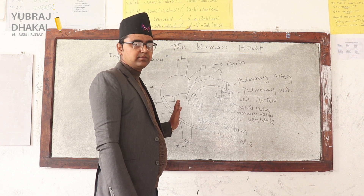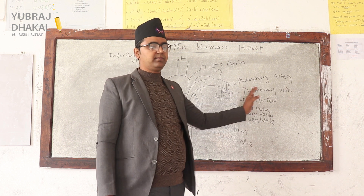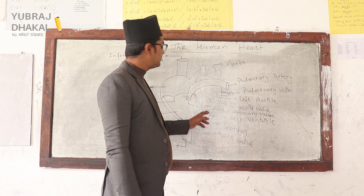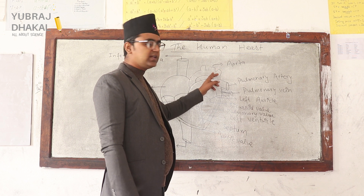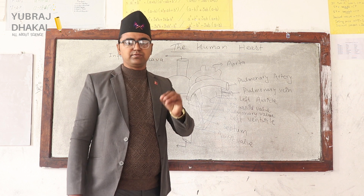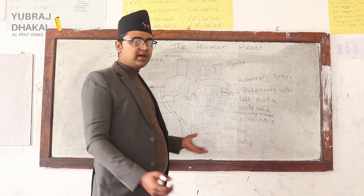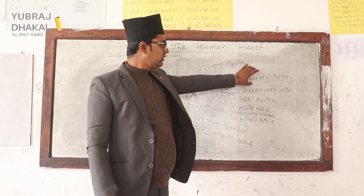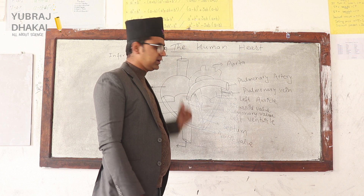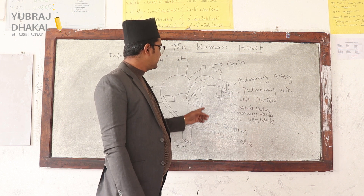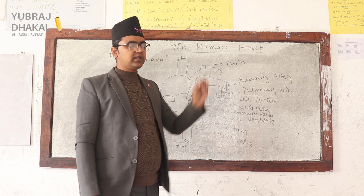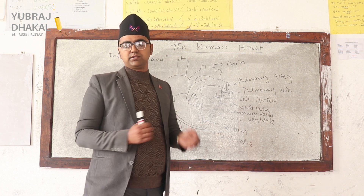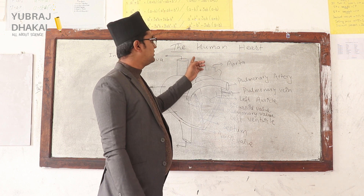The right side of the heart contains impure blood — deoxygenated blood — while the left side contains oxygenated blood. The left ventricle pumps oxygenated blood through the aorta to different arteries and capillaries throughout the body. This is our blood circulation — this is the blood circulation of the human heart.